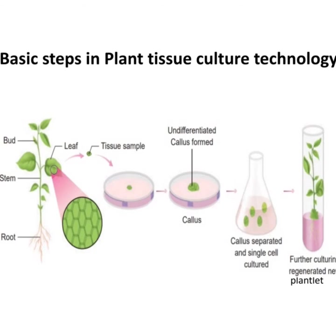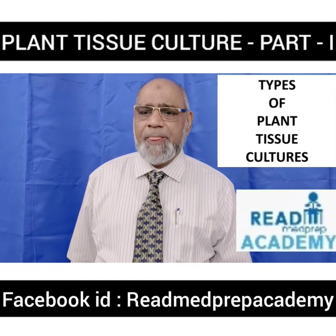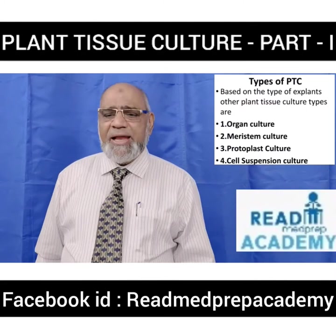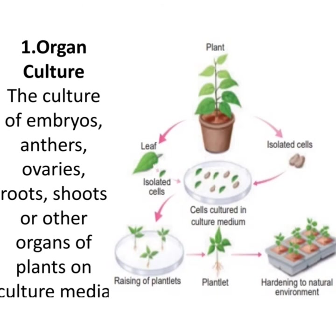There are different types of plant tissue culture: organ culture, meristem culture, protoplast culture, and cell suspension culture. Organ culture is the culture of embryos, anthers, ovaries, roots, shoots, or other organs on a culture medium. In the image you can see a plant leaf or isolated cells placed in culture medium under culture conditions; after callus formation, plantlets are grown, hardened, and sent to the natural environment.